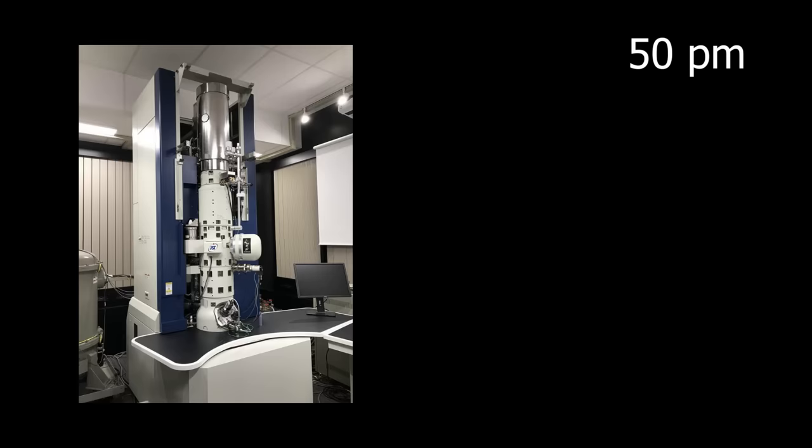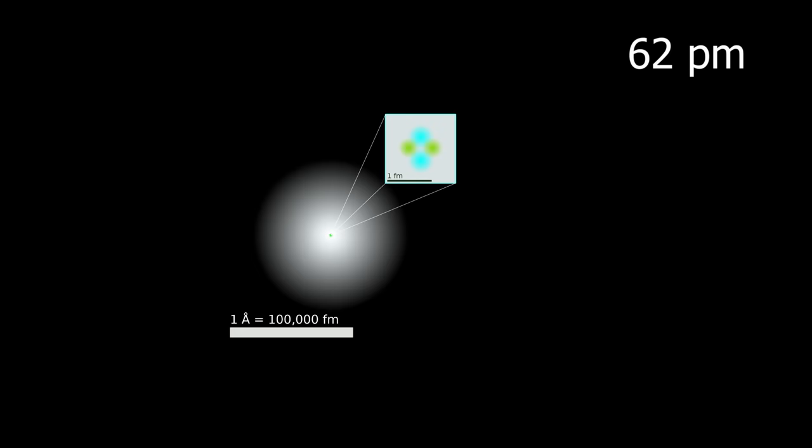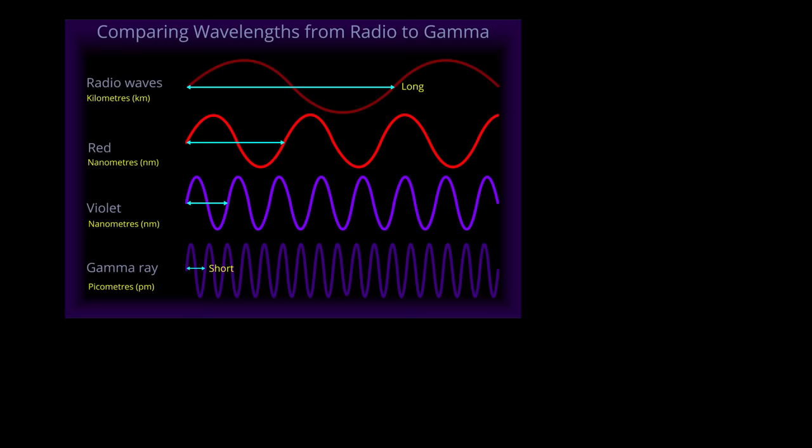After 50 picometers, even the best electronic microscopes become obsolete. Close to that limit is the smallest atom, the helium atom. 25 times smaller we have the gamma ray wavelength. Next we have the electron, which is 200 times smaller than that.